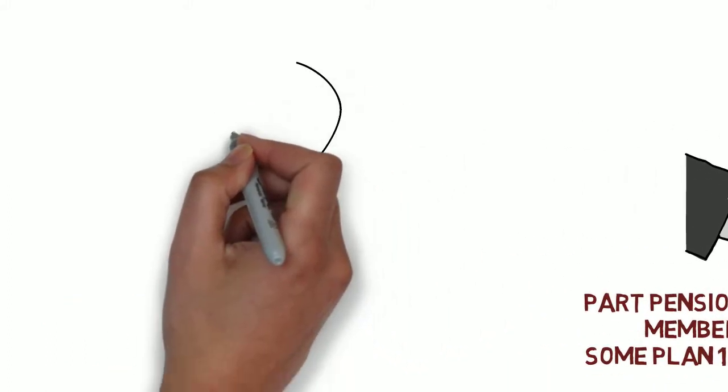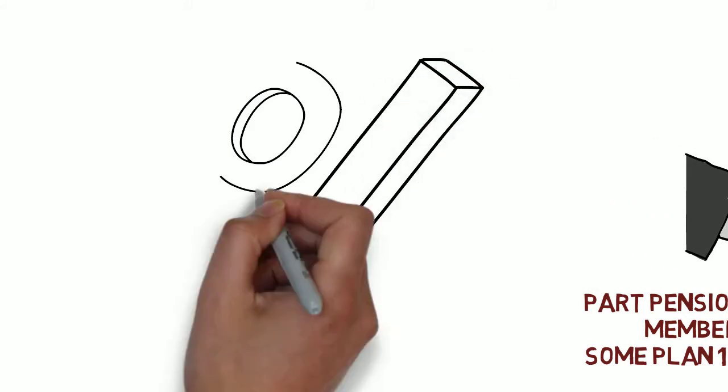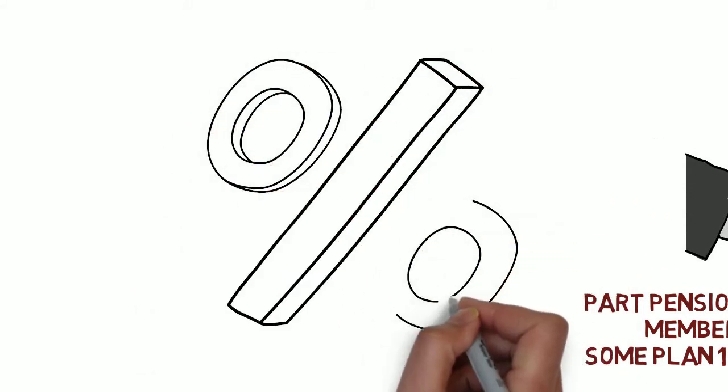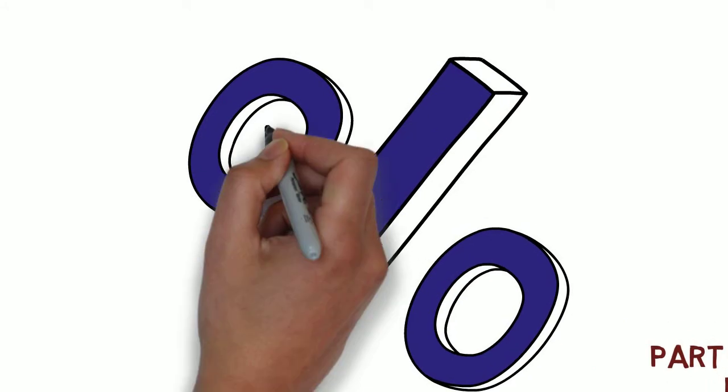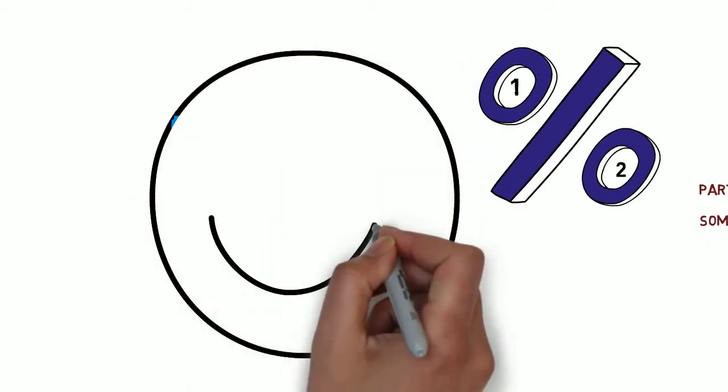So to recap so far, Plan 1 and 2 members get a percentage of their highest years of salary for the rest of their life guaranteed. That's right, said guaranteed, like for as long as you live for life. Pretty cool, huh? Yeah, we think so too.